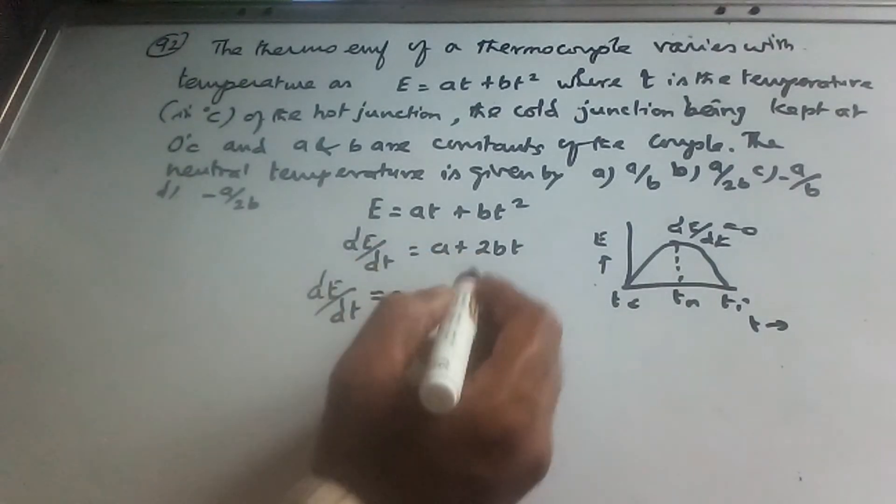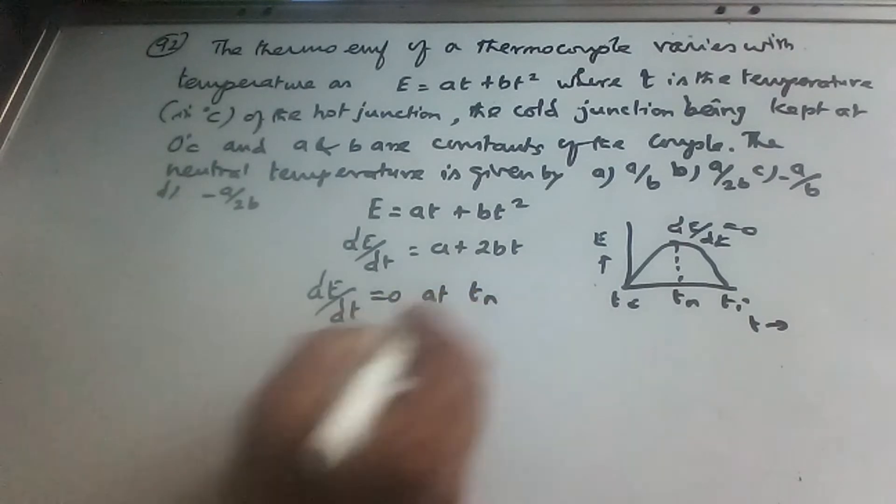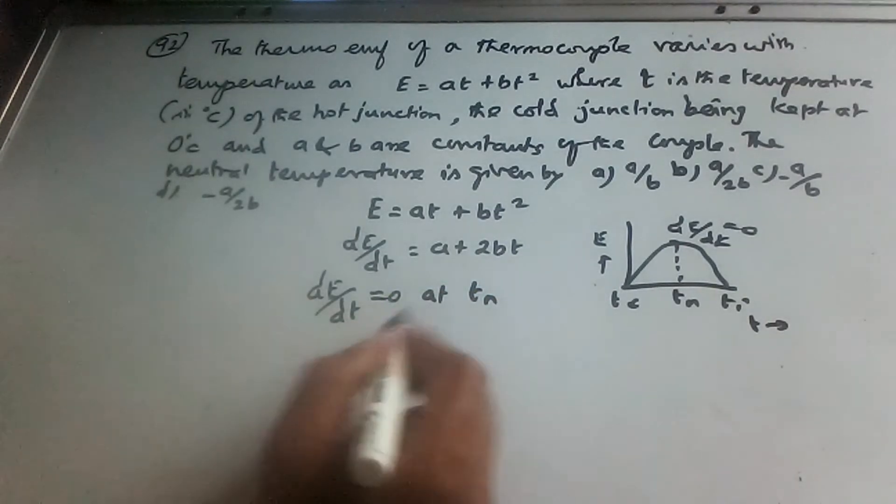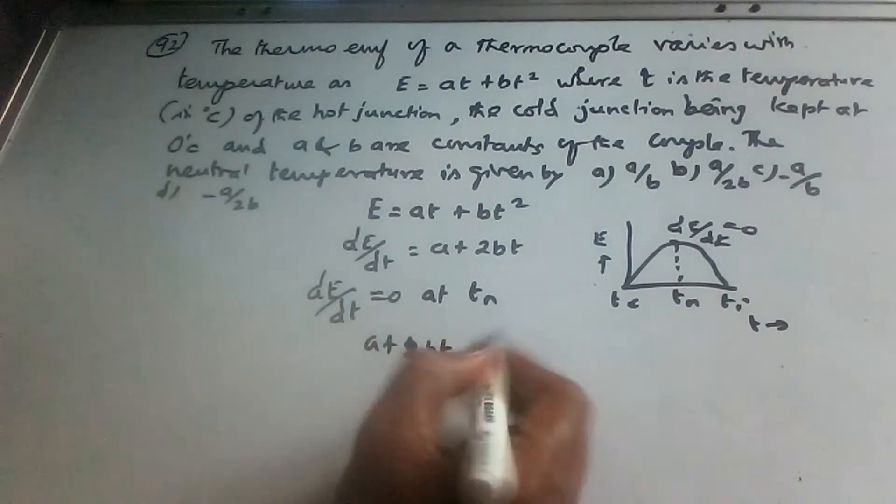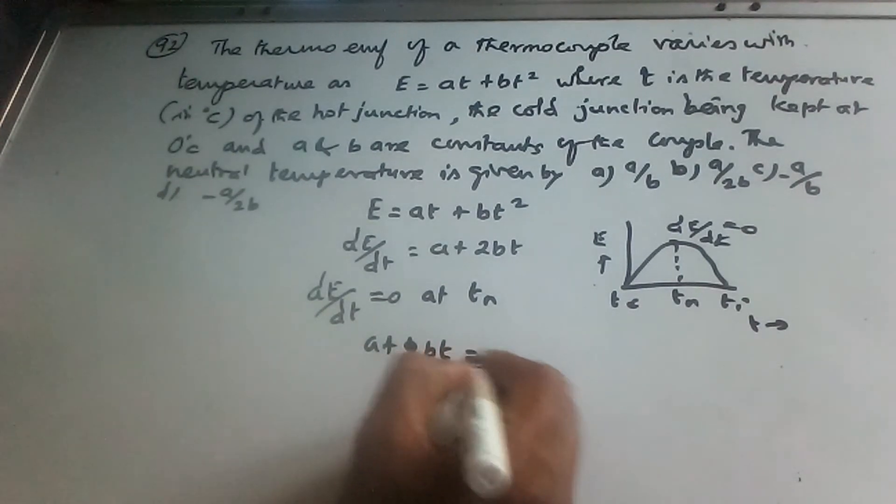dE with respect to temperature, then dE by dT is equal to A plus 2BT. Now, dE by dT is equal to 0.